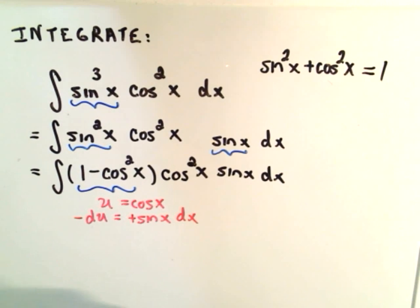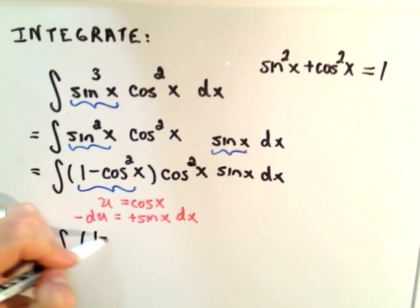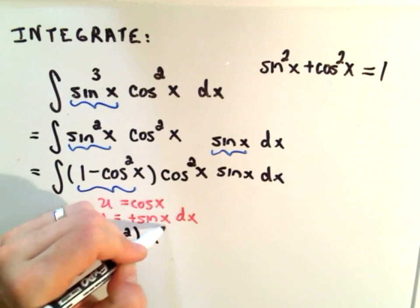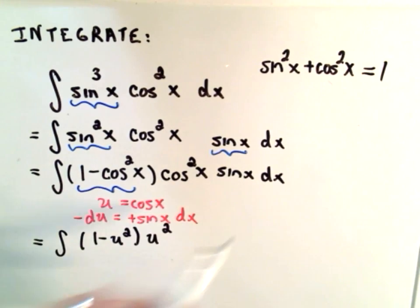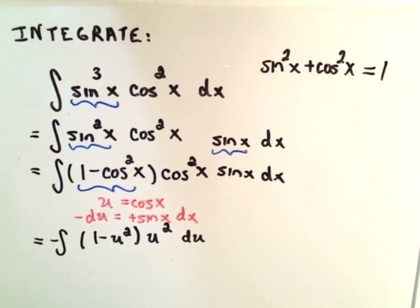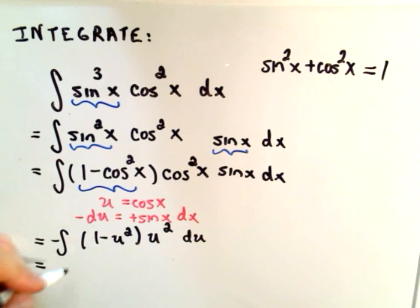It's just a matter of replacing everything with your u-substitution. So we're left with one minus u squared times another u squared. This is the whole point of saving this one odd factor, so that your u substitution works out. You'll get negative du.